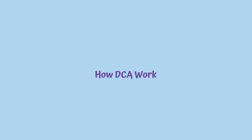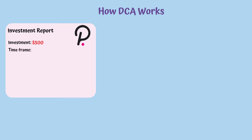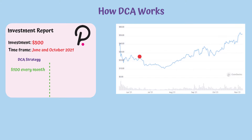How DCA Works: Let's say you wanted to invest $500 in DOT across a 5-month period between June and October 2021, meaning $100 every month. The prices of DOT for each of those months were $27.01, $16.86, $31.47, $37.38, and $44.88. With this money, you could have purchased 3.7 DOT in the first month June, followed by 5.93, 3.17, 2.67, and finally 2.22 DOT in October.